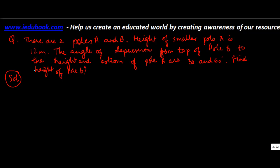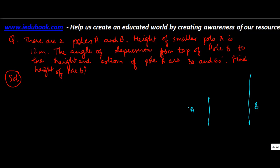Let me take you through the question first. There are two poles A and B. The height of the smaller pole A — let's call this A and this B. We know that A is the smaller pole, and its height is 12 meters.